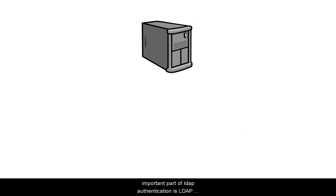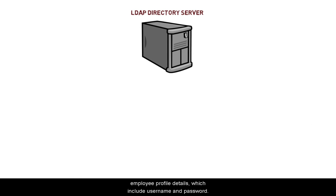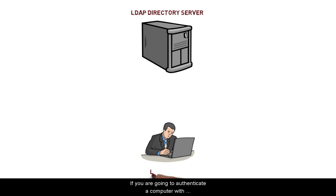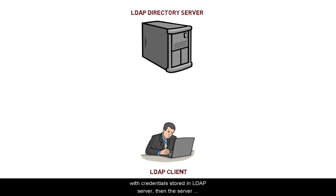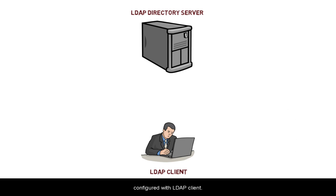Now let's visualize the flow of LDAP authentication for better understanding. The most crucial and important part of LDAP authentication is the LDAP directory server setup — this is where we store our employee profile details, which include username and password. The second important part is the LDAP client. If you are going to authenticate a computer using credentials stored in the LDAP server, then the LDAP client has to be set up on that computer. If you are going to authenticate a web application, then the server hosting the application has to be configured with the LDAP client.